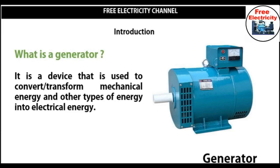What is a generator? A generator — some of us know what it is. It is a device that converts mechanical energy into electrical energy. When the generator is rotating, there is a mechanical form, and there is a device inside it which is the coil system that enables this rotation to be converted into electrical form.